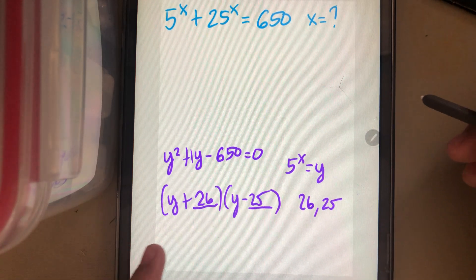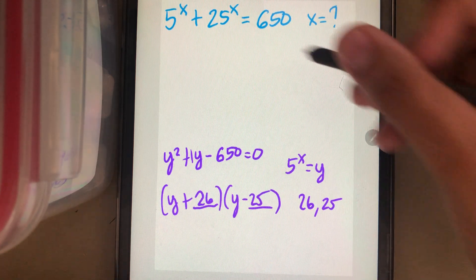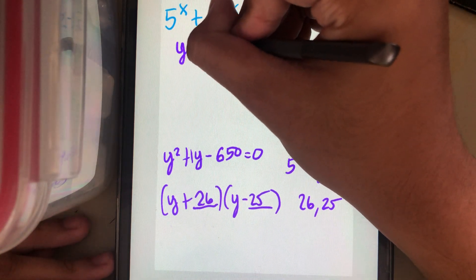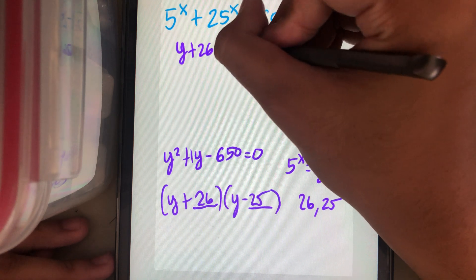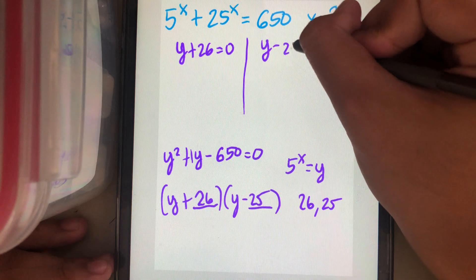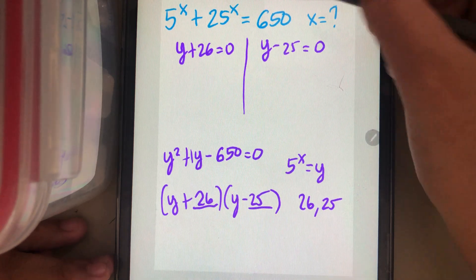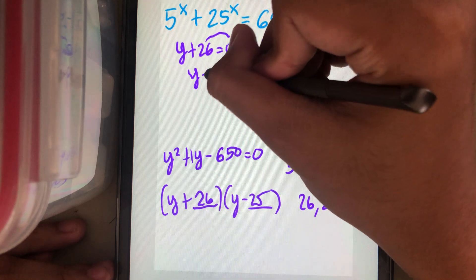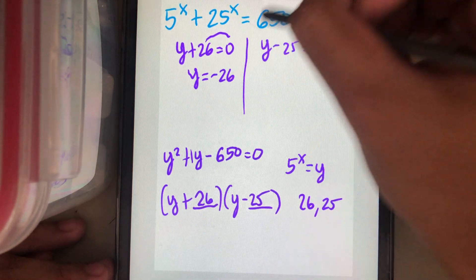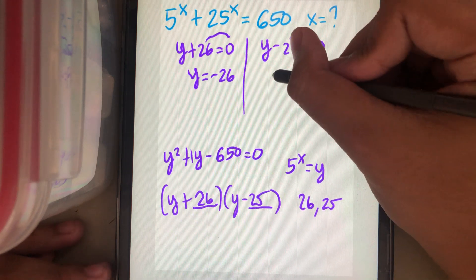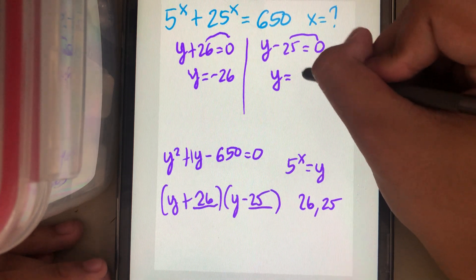And now we can let these numbers in the parentheses equal to 0. y plus 26 equal to 0, and y minus 25 equal to 0. We can move the 26 here. y is equal to minus 26. We can move the 25 to the right. On the right equation, y is equal to 25.